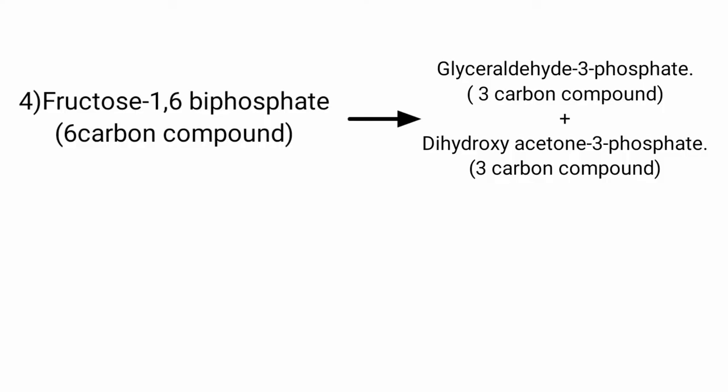In step 3, fructose-6-phosphate reacts with another ATP. The resulting fructose-1,6-bisphosphate has phosphate groups at the first and sixth carbon positions. In step 4, fructose-1,6-bisphosphate is cleaved into two 3-carbon molecules: glyceraldehyde-3-phosphate and dihydroxyacetone-3-phosphate. The enzyme that breaks fructose-1,6-bisphosphate is called aldolase.